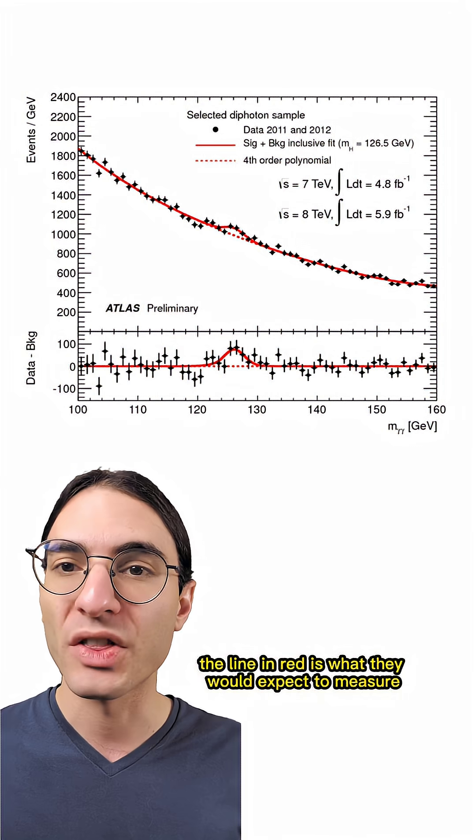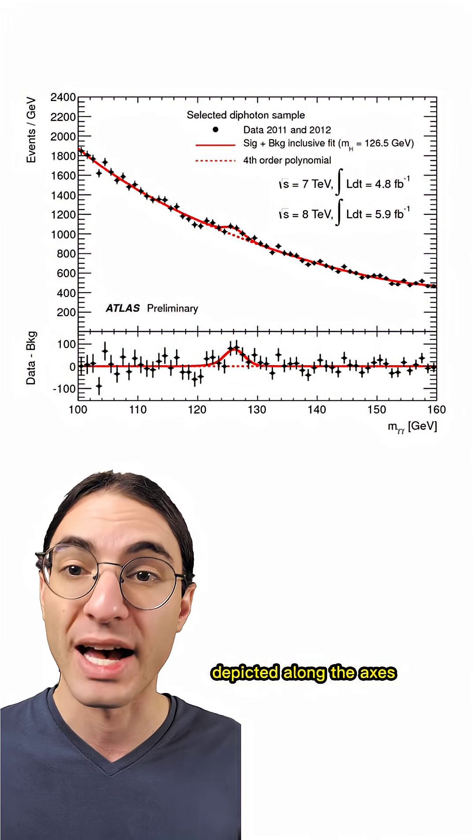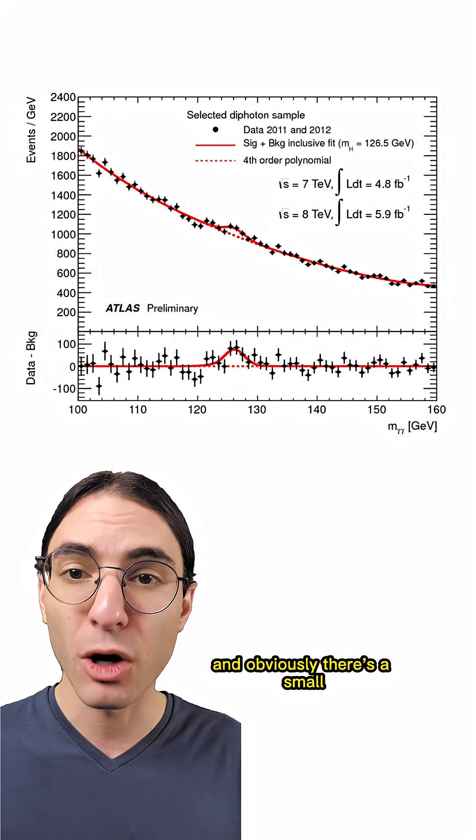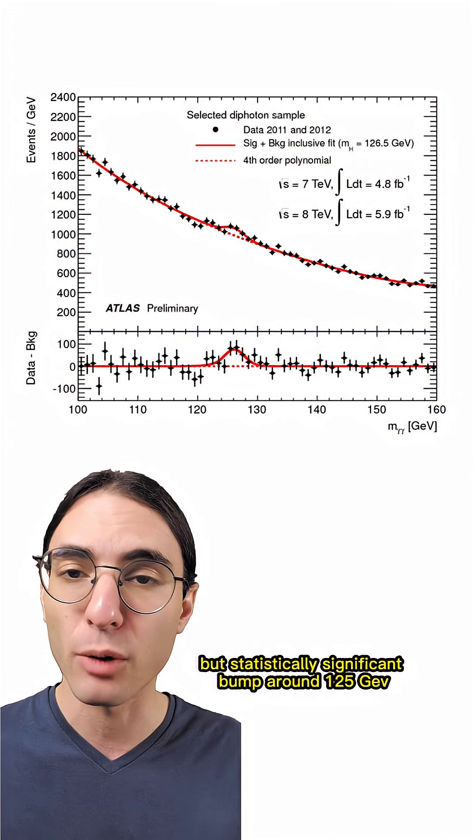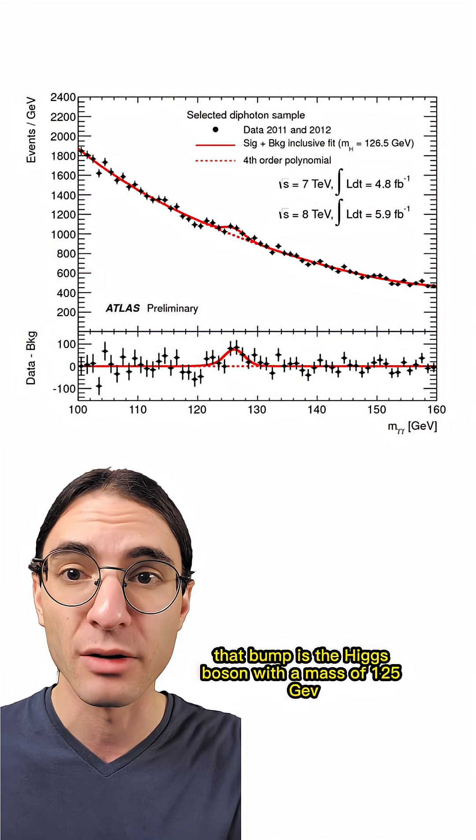Now, the line in red is what they would expect to measure if there were no Higgs boson in the mass range depicted along the axes, and the black dots are the data collected, and obviously there's a small but statistically significant bump around 125 GeV. That bump is the Higgs boson with a mass of 125 GeV.